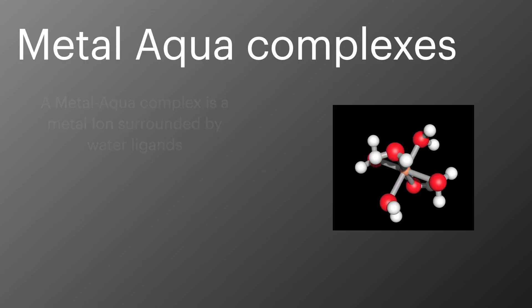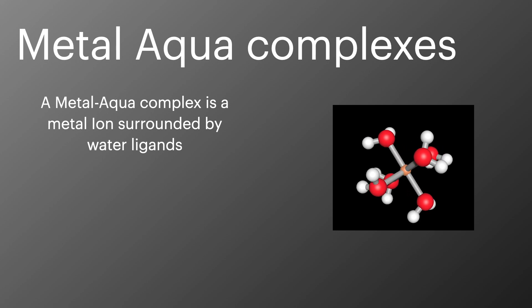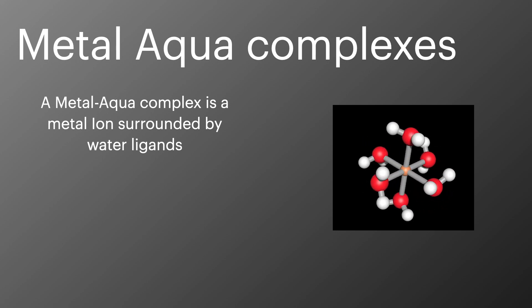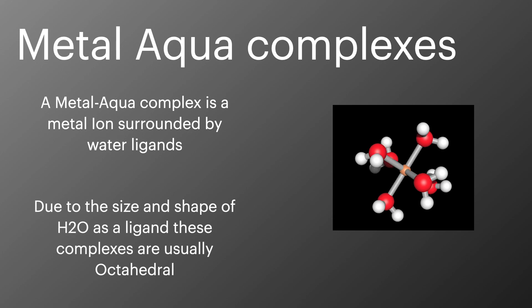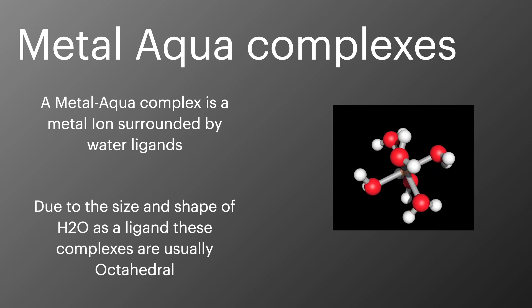A metal aqua complex is a metal ion surrounded by water ligands. They're very common and many of the complexes we looked at in the transition metals topics were actually metal aqua complexes. Due to the relatively small size of the water ligand especially when compared to ligands like chloride, all the complexes we're going to look at form octahedral shapes.